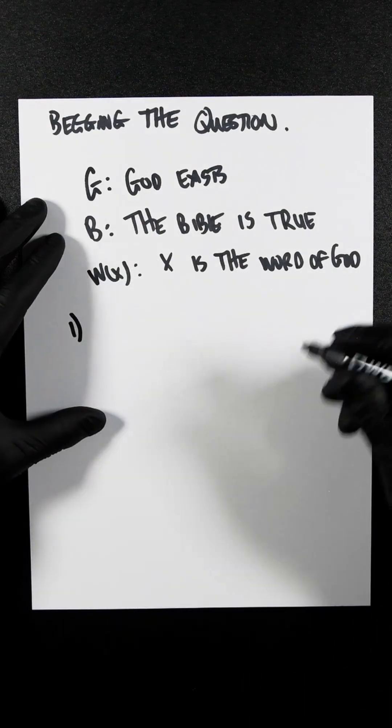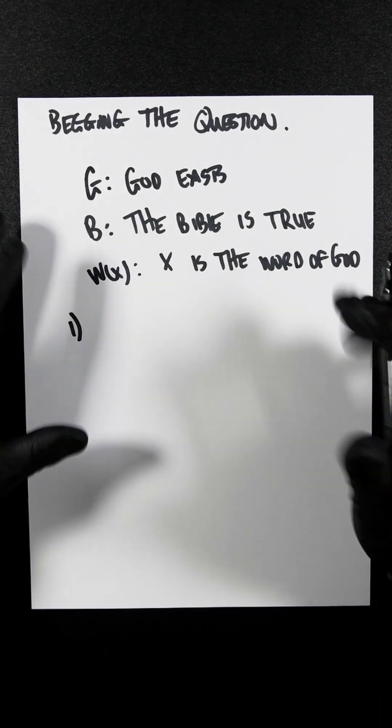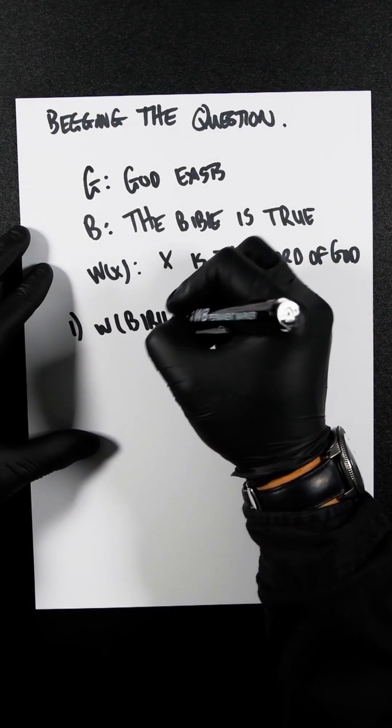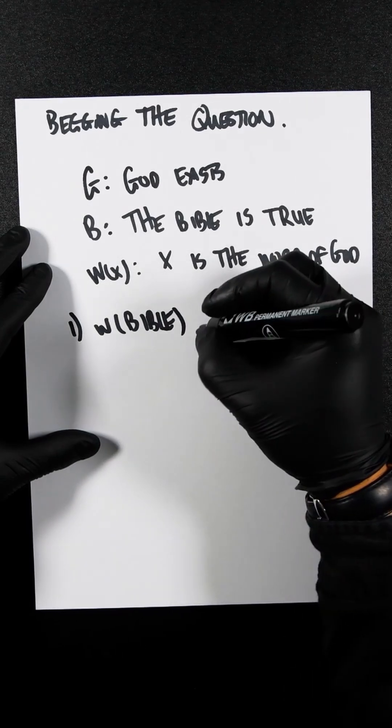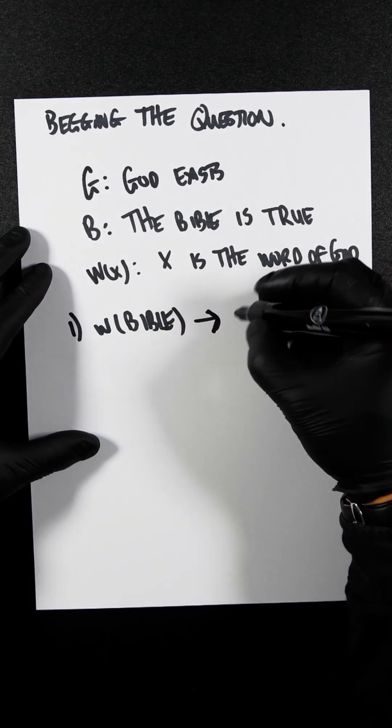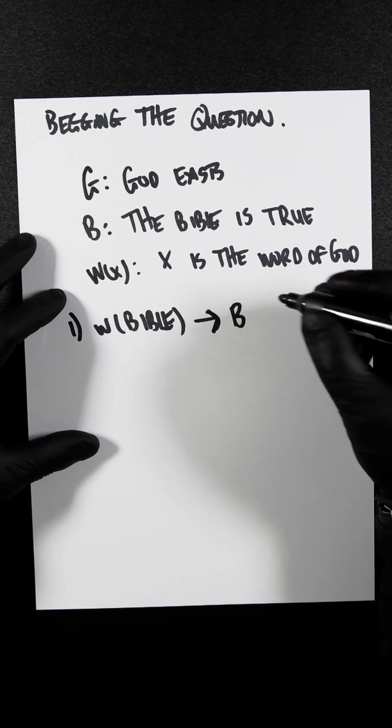We can now set up, using these pieces of propositional logic, into predicates. So we have W(Bible), and then an if-then, B. So that means if the Bible is the word of God, then it is true.